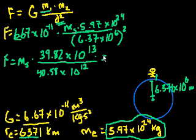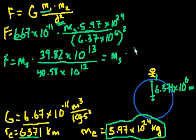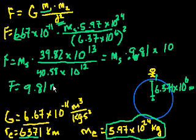And so simplifying it, the force is equal to the mass of Sal, times, let's divide 39.82 divided by 40.58 is equal to 9.81. That's just this divided by this. And then 10 to the 13th divided by 10 to the 12th is what? Oh, actually, no, this isn't 9.81, sorry. It's 0.981. 0.981 and then 10 to the 13th divided by 10 to the 12th is just 10, right? 10 to the first times 10. So what's 0.981 times 10? Well, so the force is equal to 9.81 times the mass of Sal.